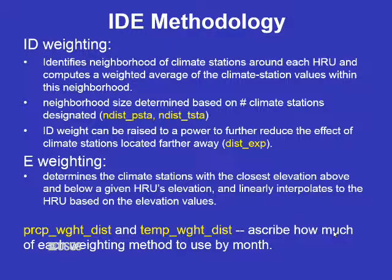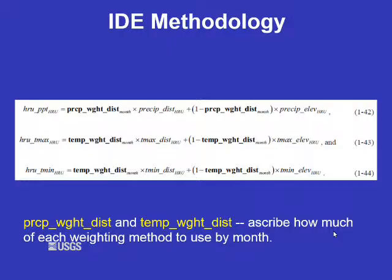The elevation weighting determines the climate stations with the closest elevations above and below a given HRU's elevation, then interpolates to the HRU based on those elevation values. PRMS calculates the climate variable from both the inverse distance weighting and the elevation weighting, and these are weighted and summed using the precip_weight_dist and temp_weight_dist parameters, which are monthly. For example, in winter you might weight elevation more heavily due to orographic influence, while in summer you might use more inverse distance weighting since precipitation is more convective and localized.